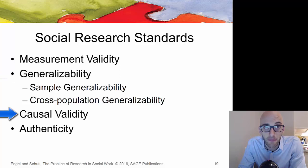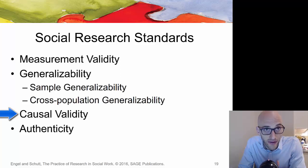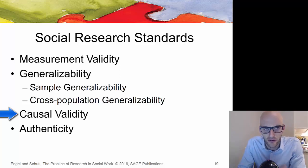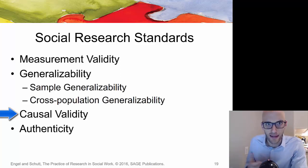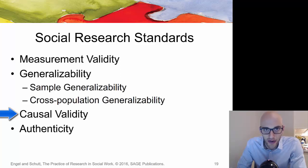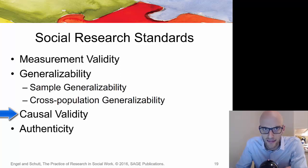Causal validity: someone might imply that correlation and causation are the same thing. If there's one thing to walk away from this course knowing, it's that correlation and causation are not the same thing — just because there's a relationship between two variables doesn't mean one causes the other. For example, ice cream sales and violent crime have a strong correlation, but it's not the ice cream causing violence. It's the heat — when it gets warmer, people buy more ice cream and also spend more time outside, leading to more conflict. The heat is the causal factor driving both.